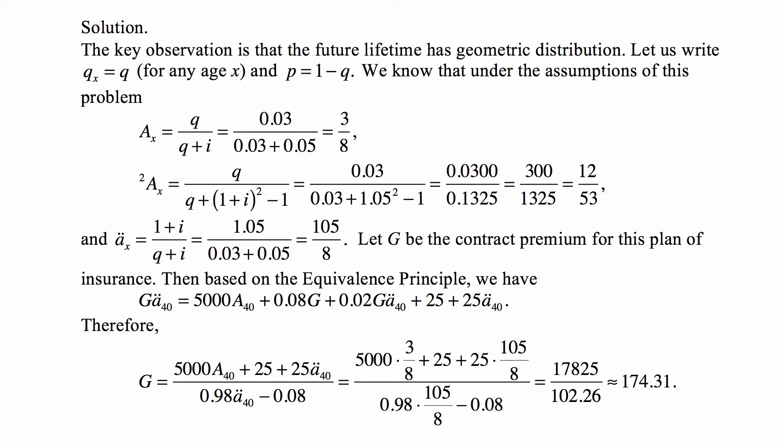Let's write qx = q for any age, because it's the same for every age, and p = 1 - q. Under the assumption of this problem, you should memorize this.